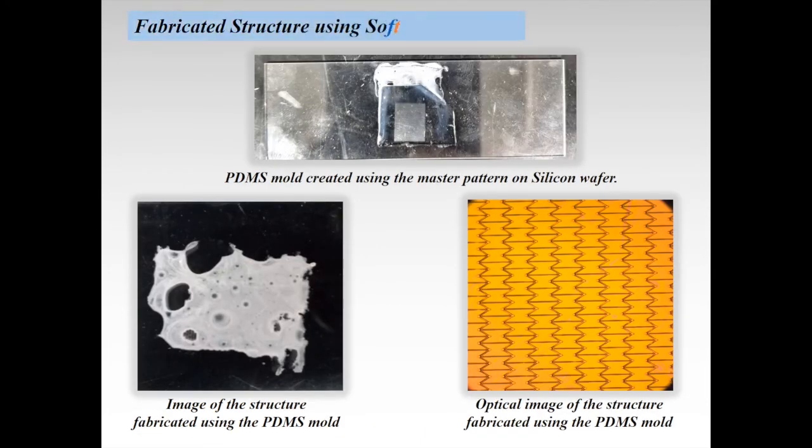Once we get the structure on the silicon wafer, we use it as a master pattern to create a PDMS mold. Due to the micro-scaling, we've taken the optical images of the final structure that we fabricated using the soft lithography process.